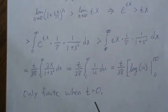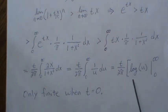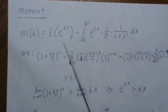It's only finite when t=0, so we can't find any moments using this moment generating function.